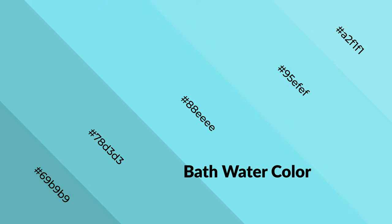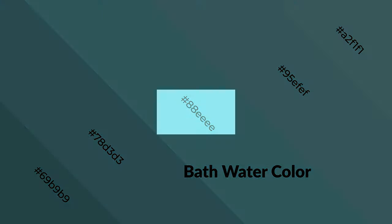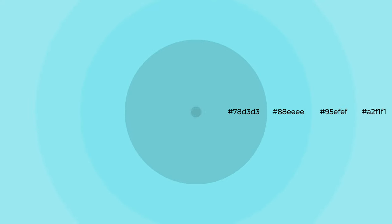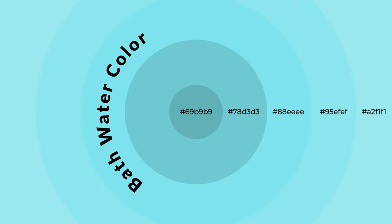Cool colors are like water, ice, sky, grass, soft, and snow. You can see them used in baby products.